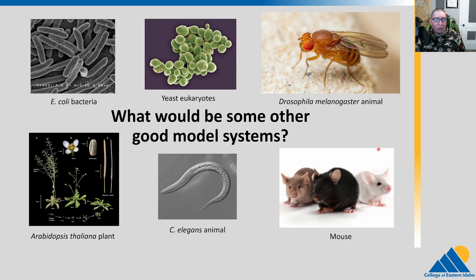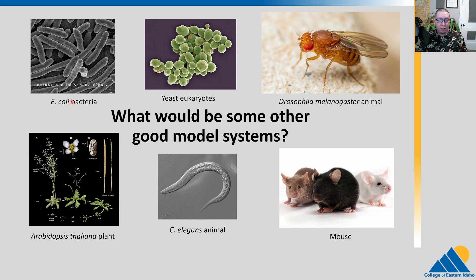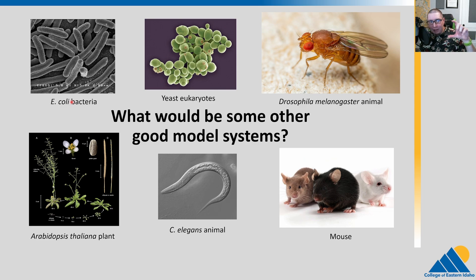Here are some model systems that commonly get used. First off, one of the most important ones for molecular biology is E. coli. We spent a lot of time talking about metabolism and things like this. E. coli is great — you can get a new generation every 20 minutes. You can keep billions of them in a small test tube, and you can easily make mutants and manipulate them. They're prokaryotes, though.